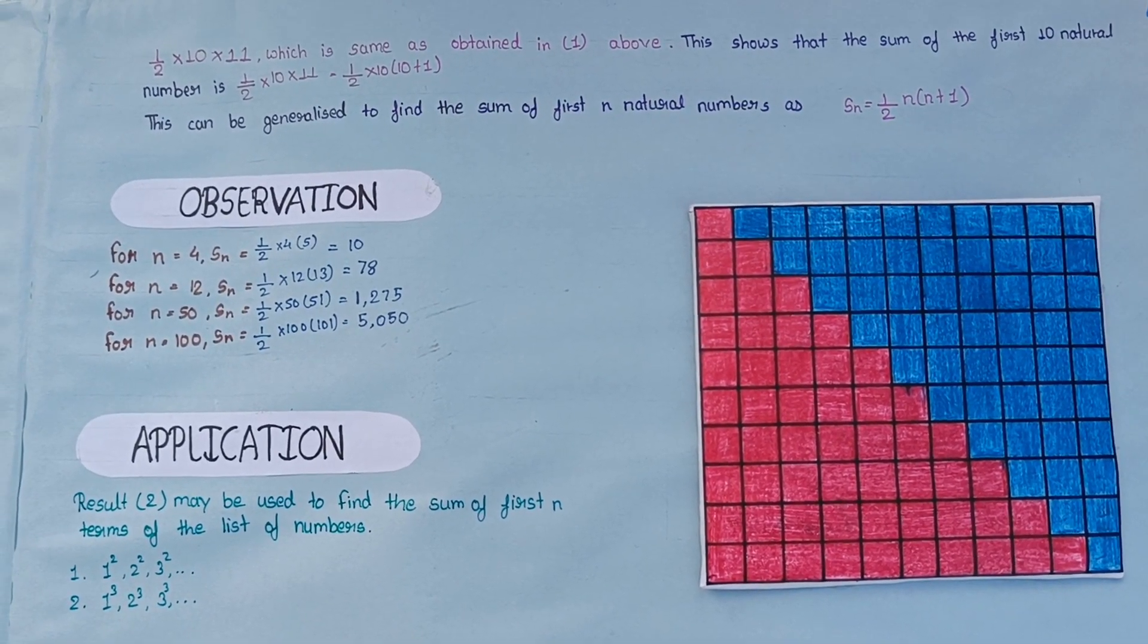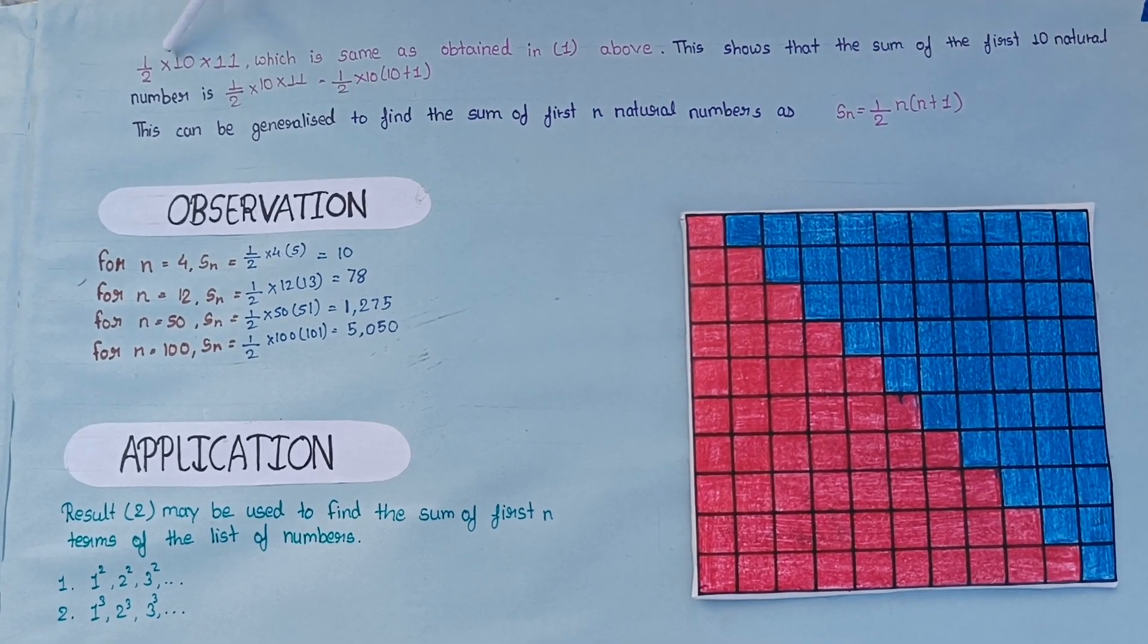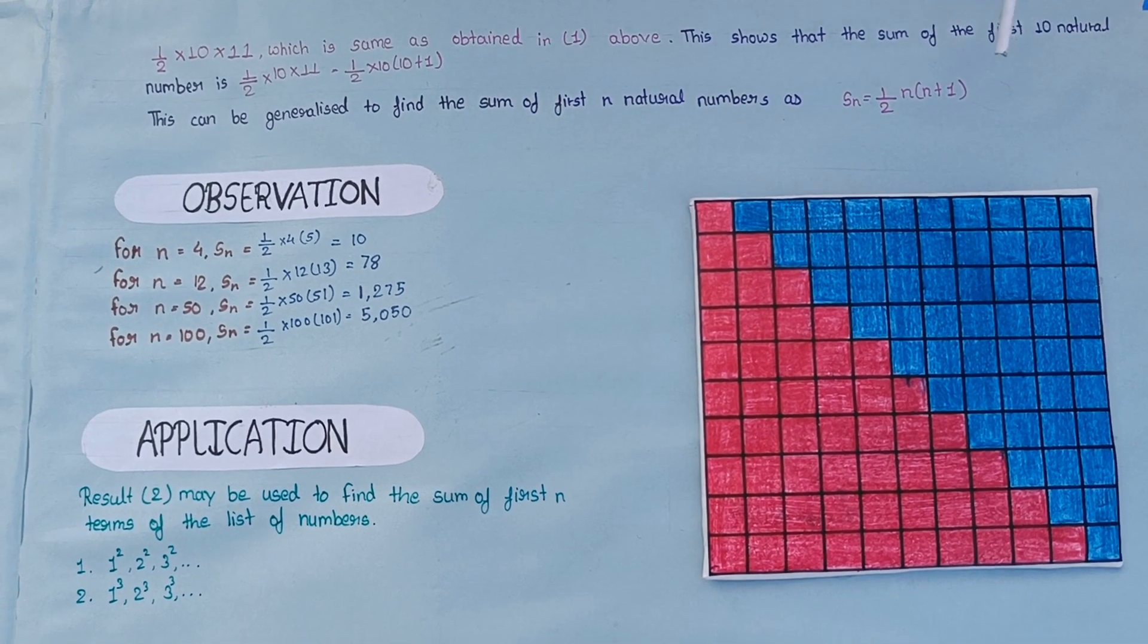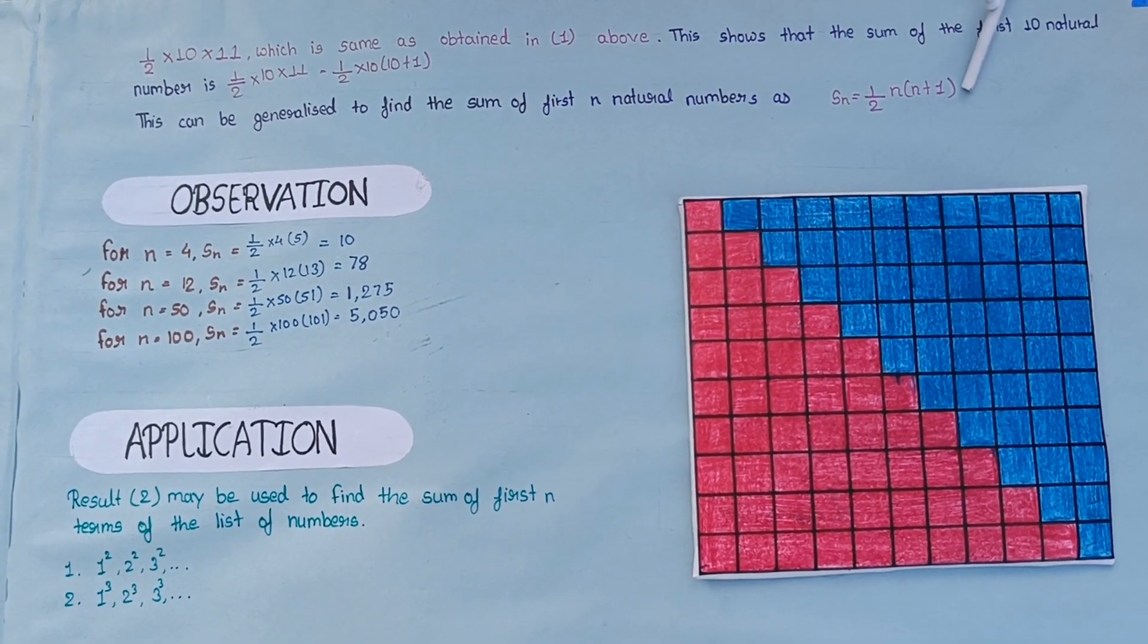Hence, the area of red color boxes would be half of this area which is 55. So, the formula for sum of N natural numbers is half of N into N plus 1.